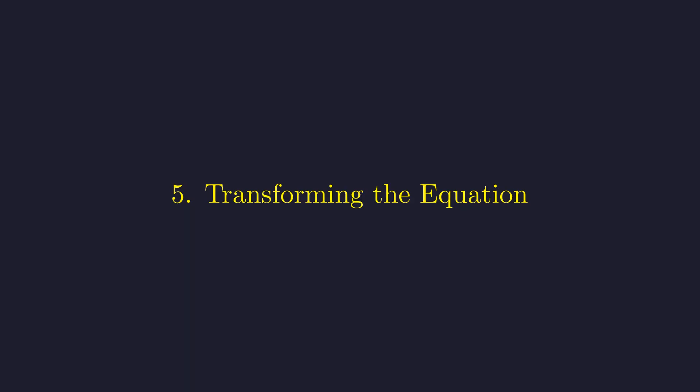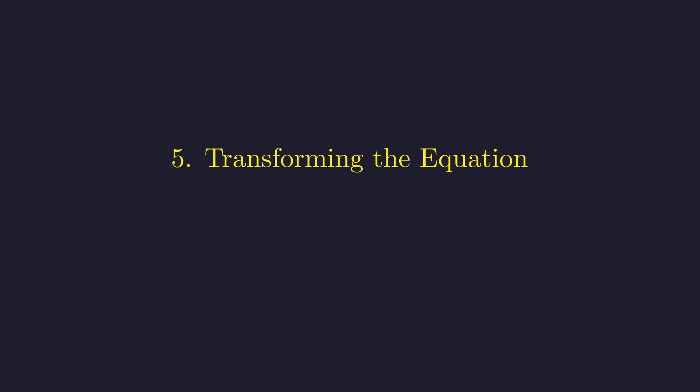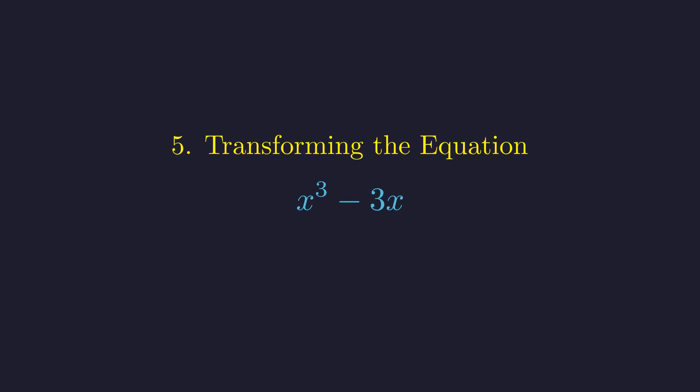Now that we know our substitution is valid, let's see what happens to the equation. Starting with the left side, we start with x cubed minus 3x. Substituting x equals 2 cosine theta everywhere. This becomes 8 cosine cubed theta minus 6 cosine theta.